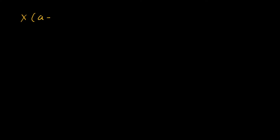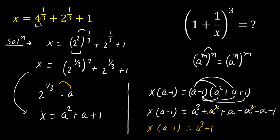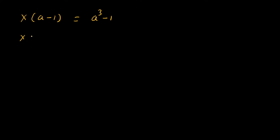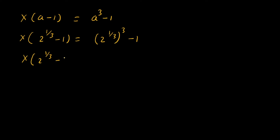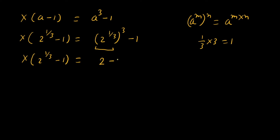So x(a - 1) = a³ - 1. We know a = 2^(1/3), so replacing a: x·(2^(1/3) - 1) = (2^(1/3))³ - 1. Applying the rule a^(m·n): 1/3 multiplied by 3 gives 1, so (2^(1/3))³ = 2¹ = 2. Therefore x·(2^(1/3) - 1) = 2 - 1 = 1.